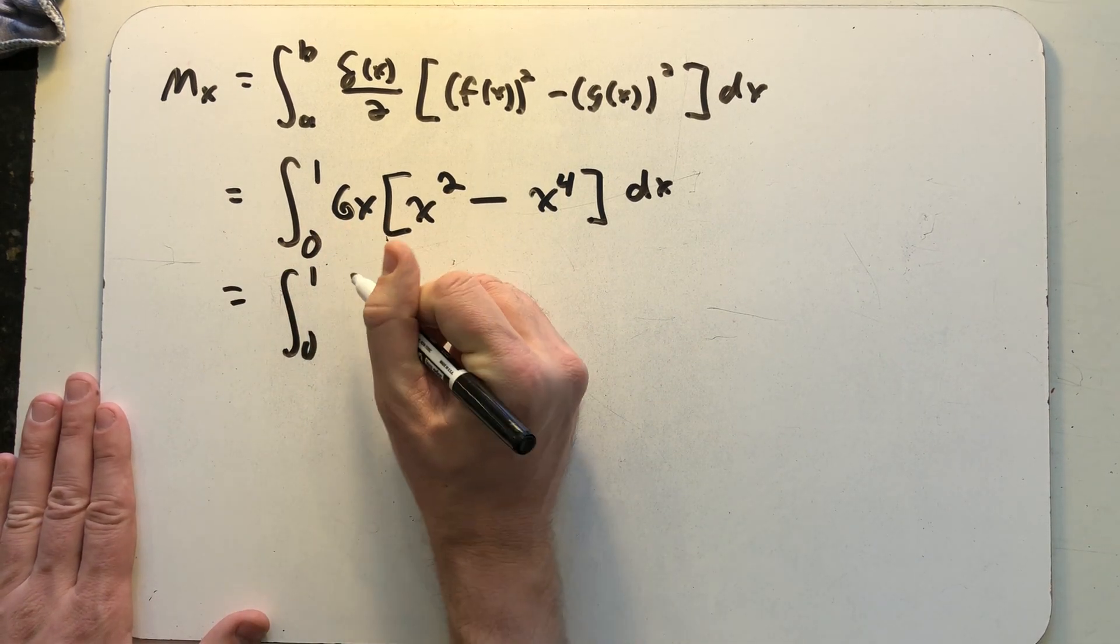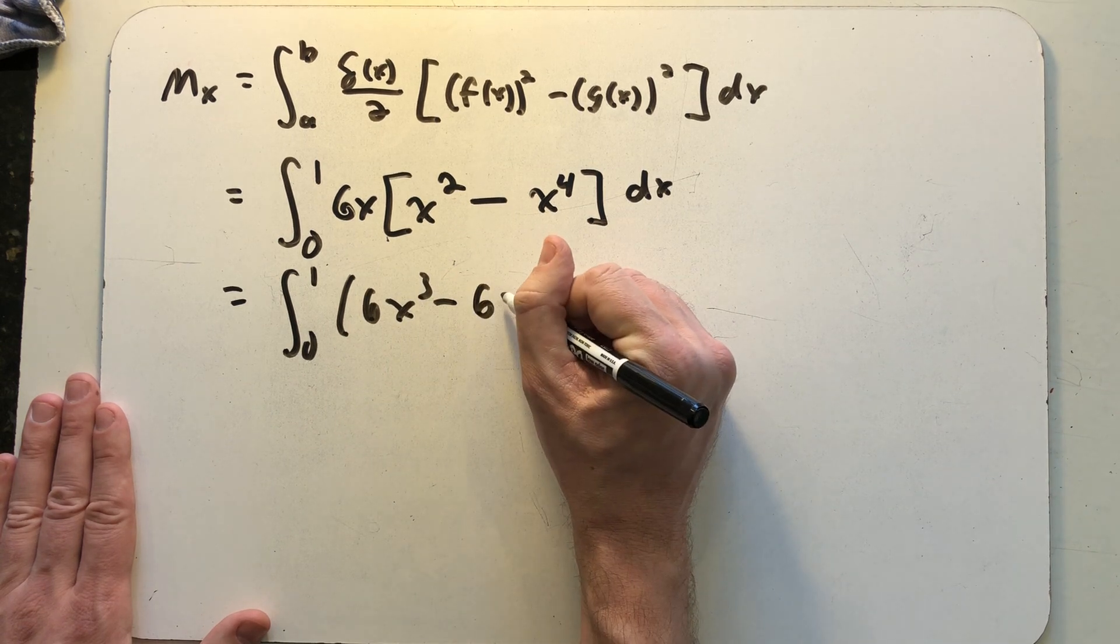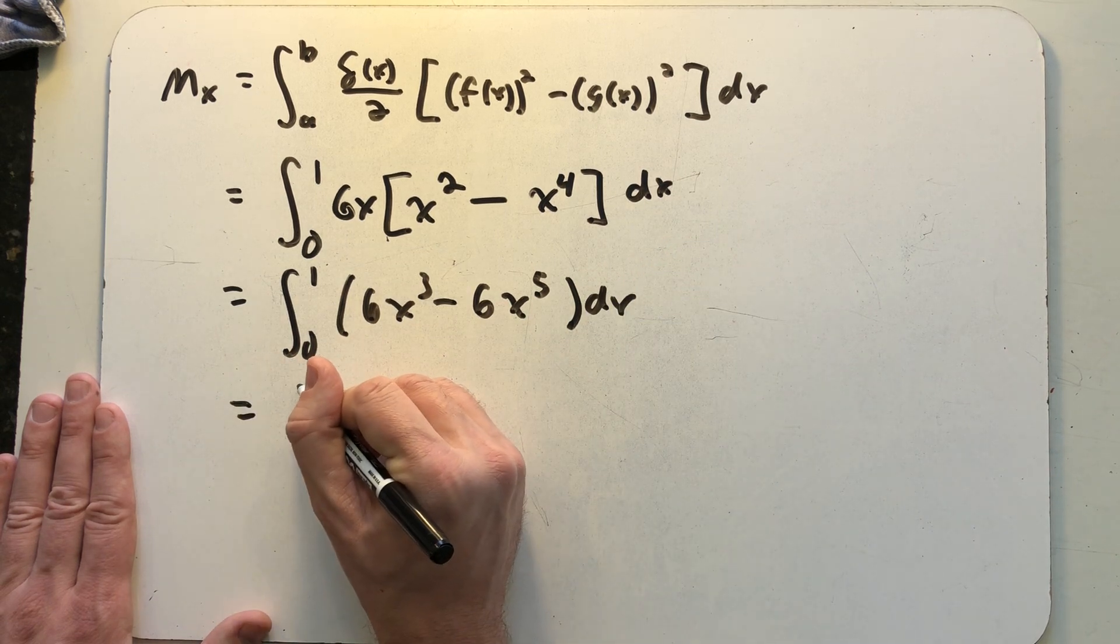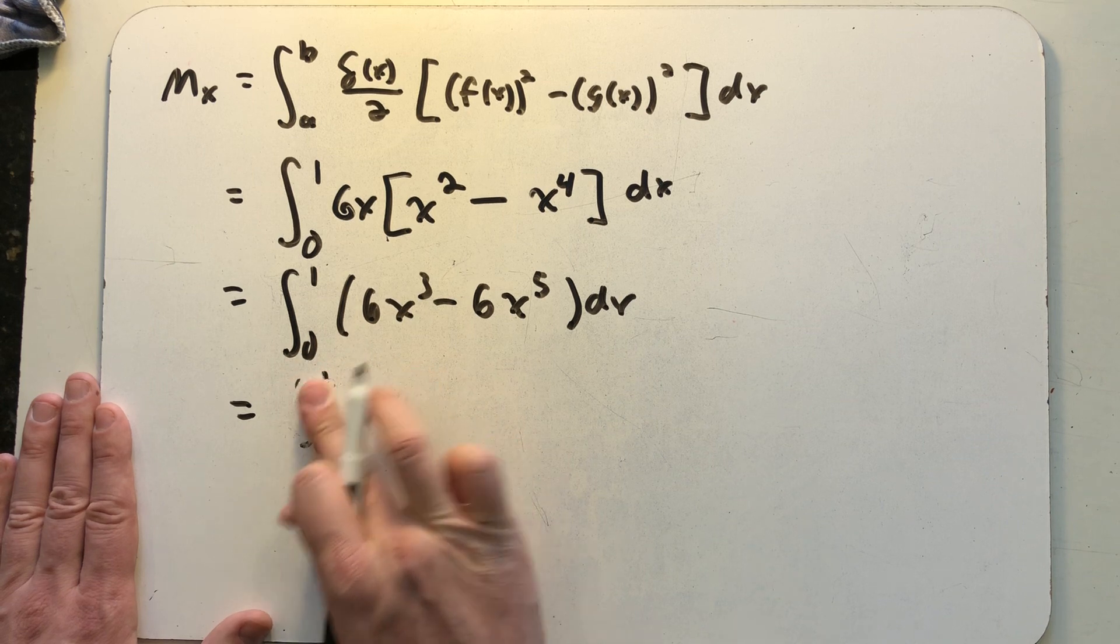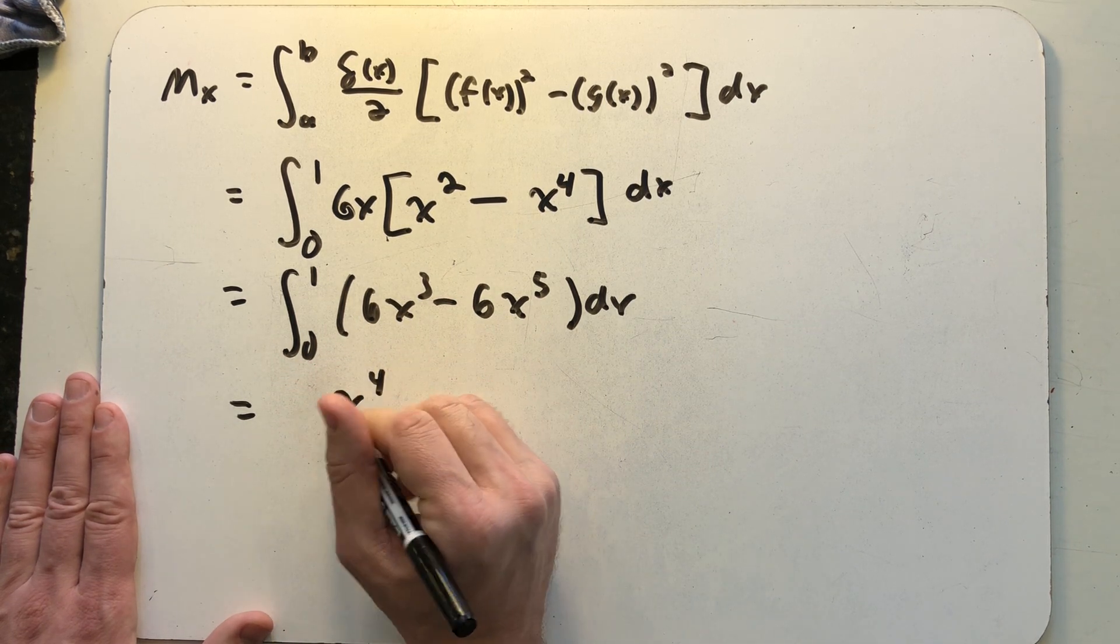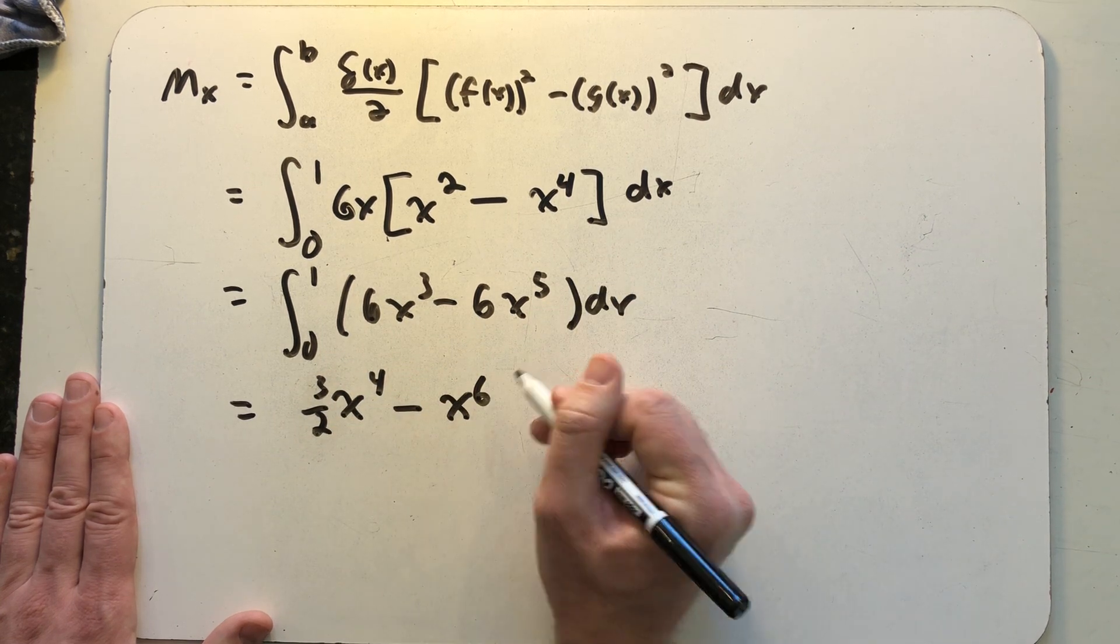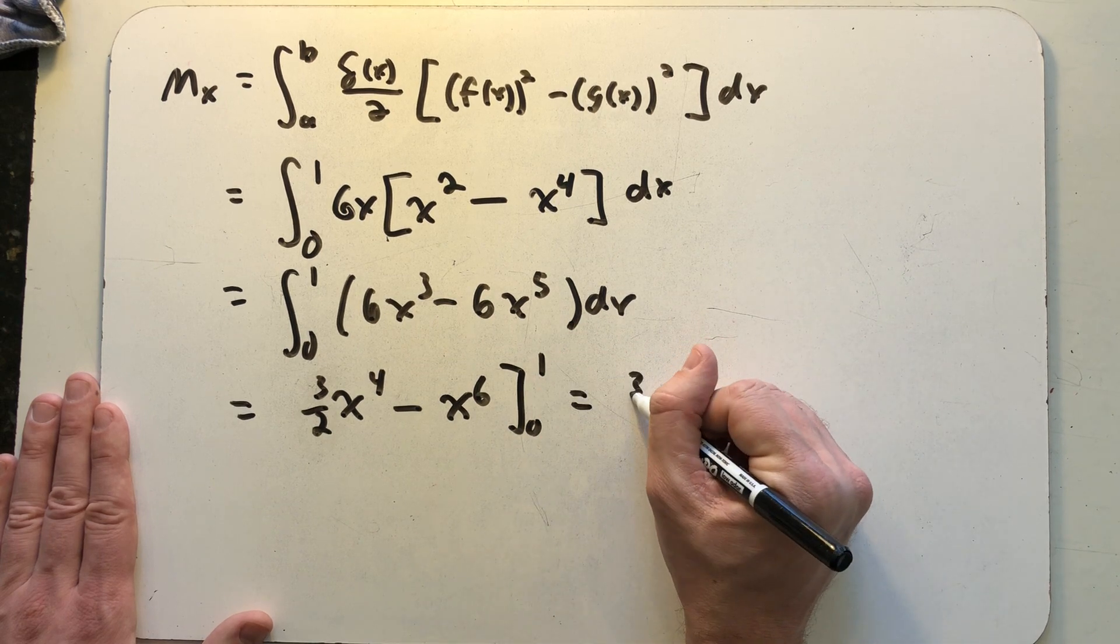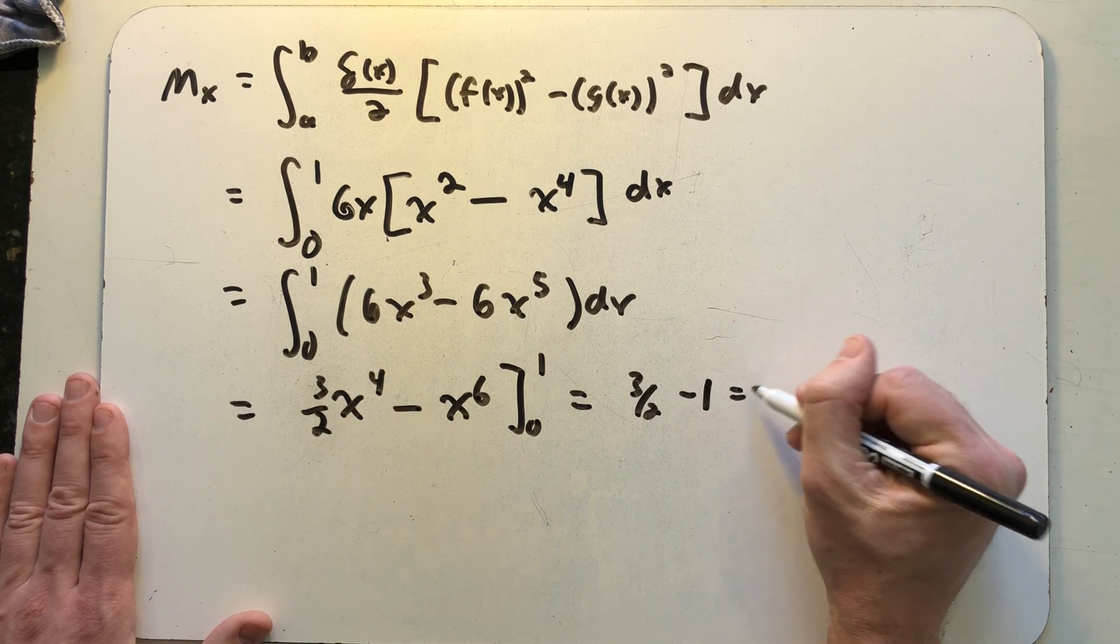Not too difficult of an integral to deal with. Let me go on and integrate at this point. That's going to be an x to the fourth and out front it looks like we're going to have a three over two minus x to the sixth and evaluate it from zero to one. Get three halves minus one, plug in the zero and those go away, so we just get one half.